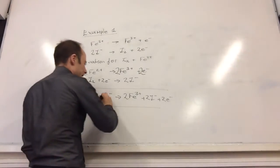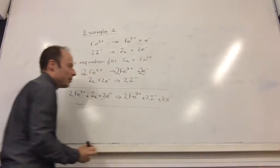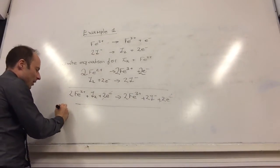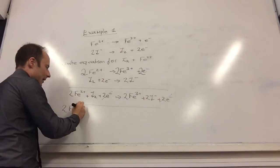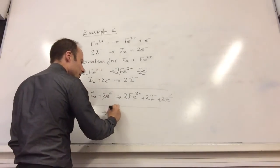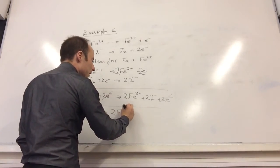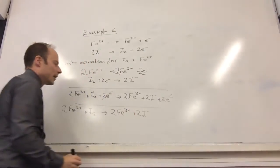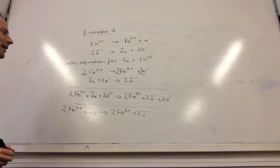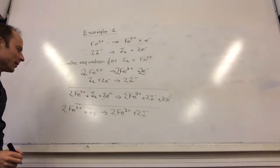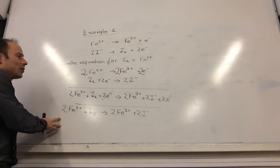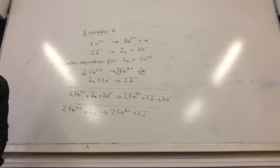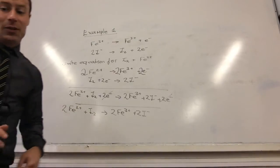Now I can cancel my electrons because they appear on both the left and the right-hand side. So that's how you do it — you should be fine with these if you've already done this before. That's the simplest case possible, pretty much.